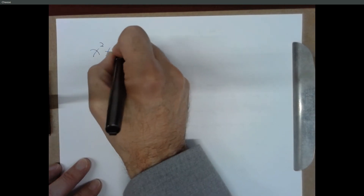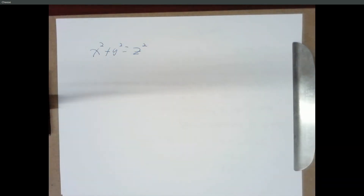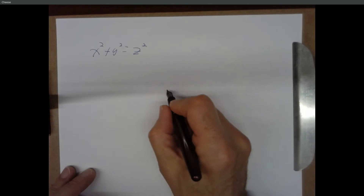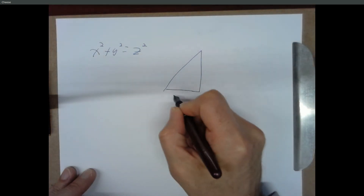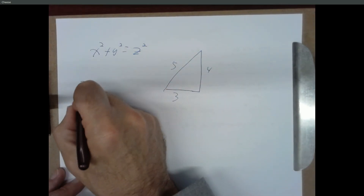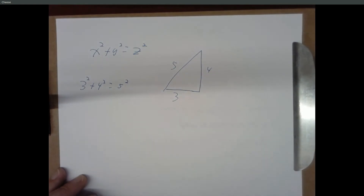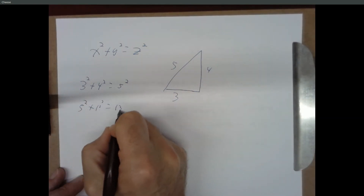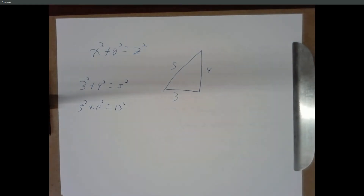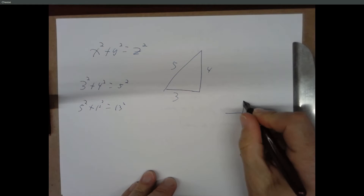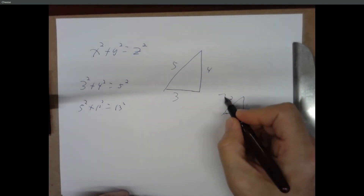Let me mention a sidebar. If you do Pythagorean triangles, z is the length of the hypotenuse, x and y are the two sides, and this relationship always holds. The Greeks were interested in whole numbers, so they were interested in things like the 3-4-5 triangle: 3² + 4² = 5², or 5² + 12² = 13². There are some triangles where all three sides are an integer length.